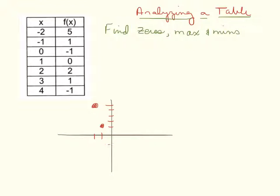0, negative 1 is on the graph. 1, 0 is on the graph. 2, 2 is on the graph. 3, 1 is on the graph. And finally, 4, negative 1. So once you have that, I'm going to sketch out what your graph would look like.